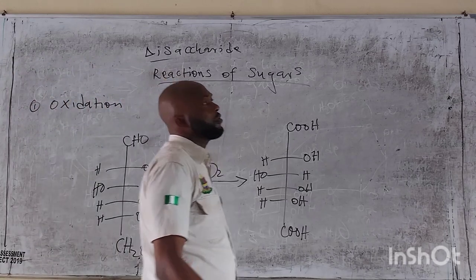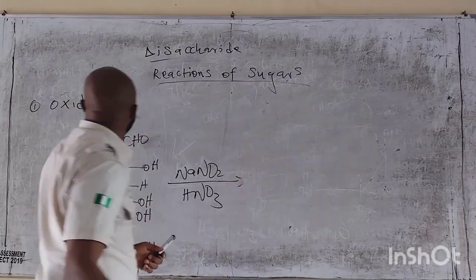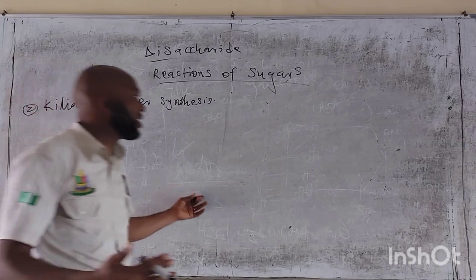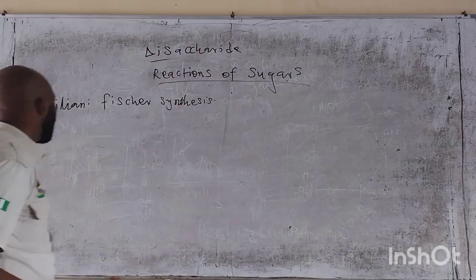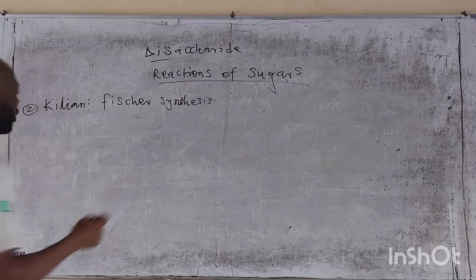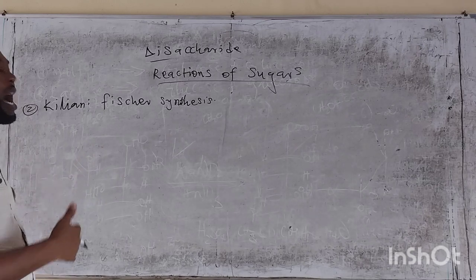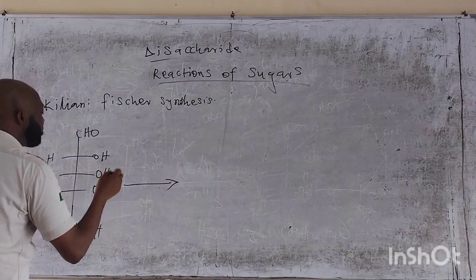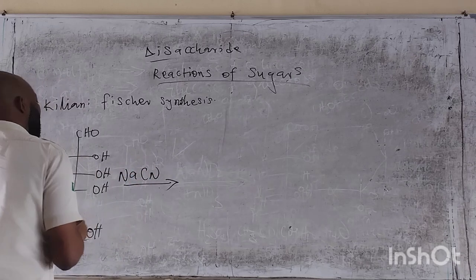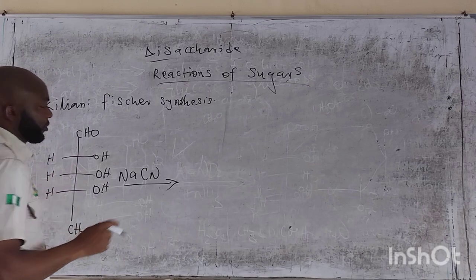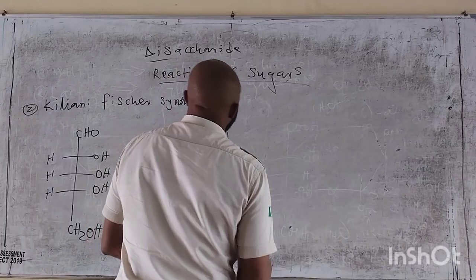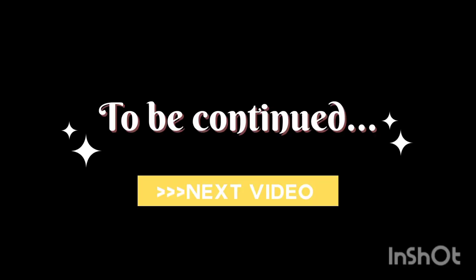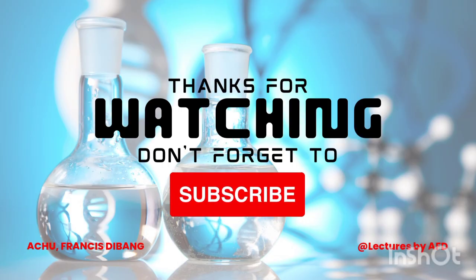Let's go to the Kiliani chain-elongation synthesis. In this reaction it tends to increase the length of the sugar molecule by one extra carbon. We are going to take ribose, which is a 5-carbon sugar — when we are done, we convert it to an aldose which becomes 6 carbons. We first react with sodium cyanide. We have carbons 1, 2, 3, 4, 5 — we are still going to get this. So when I have this, this is what I get.